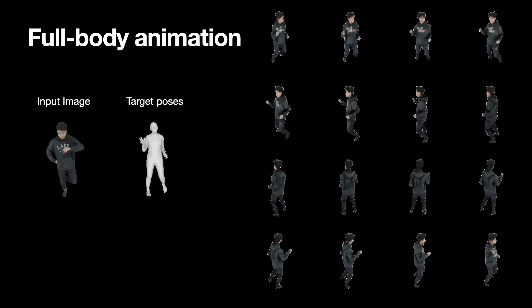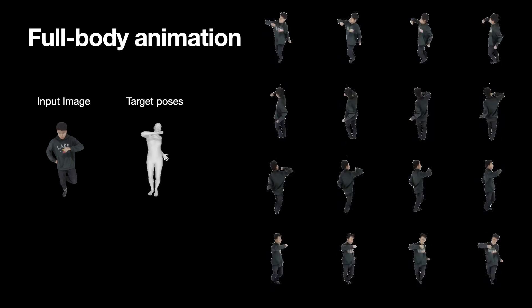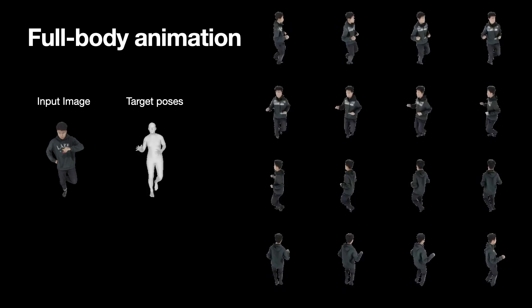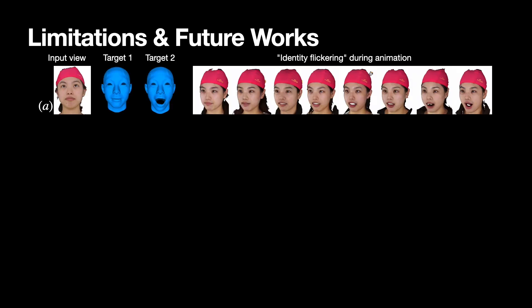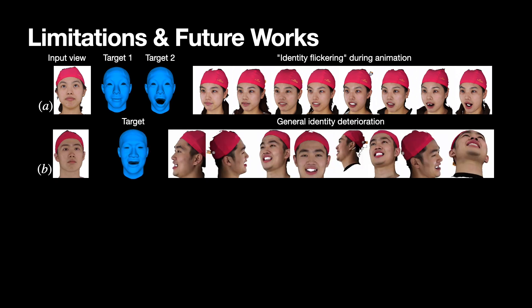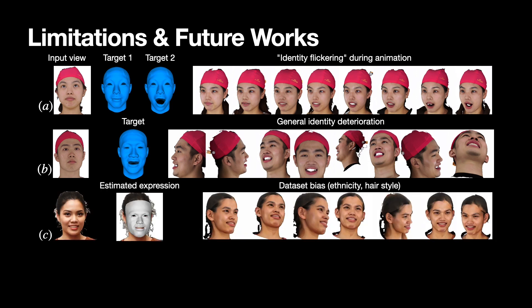We show that our method could be applied to animate a full-body image using simple meshes as driving signals. While our morphable model exhibits promising capabilities, it is essential to acknowledge its inherent limitations, such as identity flickering during expression interpolation and general identity deterioration in certain cases. Our method is also unable to generalize well to in-the-wild input images due to dataset bias in ethnicity and hairstyles. Understanding and mitigating these identity discrepancies and switching to a more diverse multi-view human face dataset would enhance the overall robustness and reliability of our morphable model.